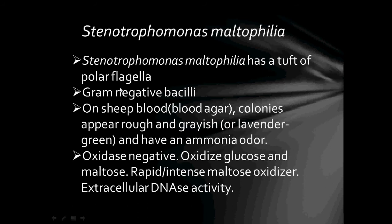Part 3 of Gram Negative Bacilli. These are bacteria that take up the counterstain safranin instead of retaining crystal violet, hence they appear as pink rods under the microscope after Gram stain.